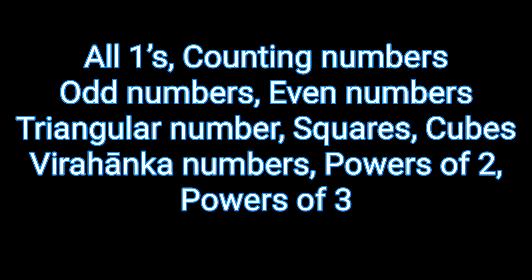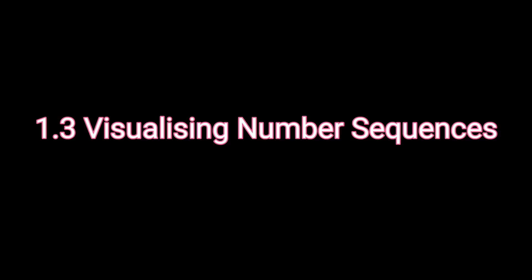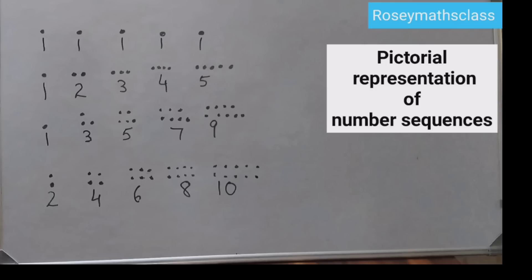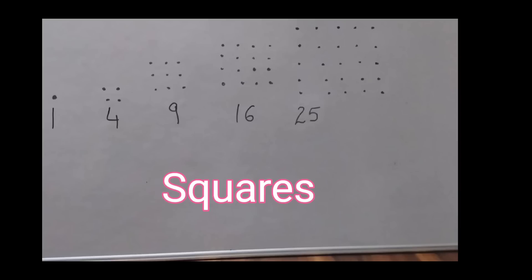1.3 is visualizing number sequences. So the 10 sequences, the 10 number sequences that you would learn in 1.2, out of that 7 number sequences are given in the form of pictures. Pictures as in pictorial representation in the form of dots or cubes. So all ones, counting numbers, odd numbers, even numbers, triangular numbers and squares. These are given in the form of pictorial representation using dots.